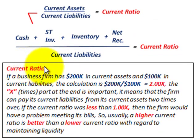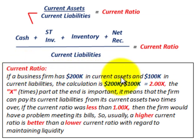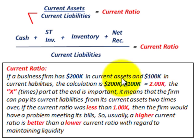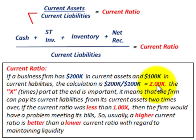So what does this current ratio represent? If a business has $200,000 in current assets and $100,000 in current liabilities, the calculation is simply $200,000 divided by $100,000, and that gives us a current ratio of 2.00.